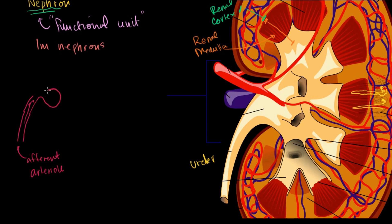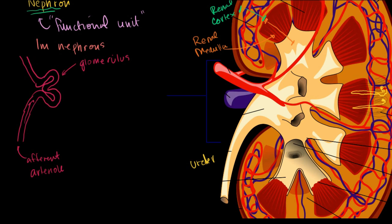The glomerulus is this big windy, winding structure. Then blood leaves via the efferent arteriole. Efferent means away from the center; afferent means towards. It's interesting that we're still dealing with an artery at this point — it's still oxygenated blood. Normally when we leave a capillary system like the glomerulus, we're dealing with the venous system, but here we're still in an arterial system. That's probably because arterial systems have higher blood pressure.